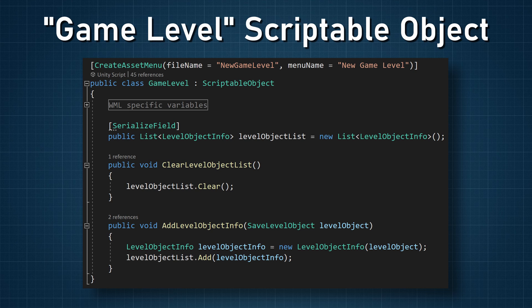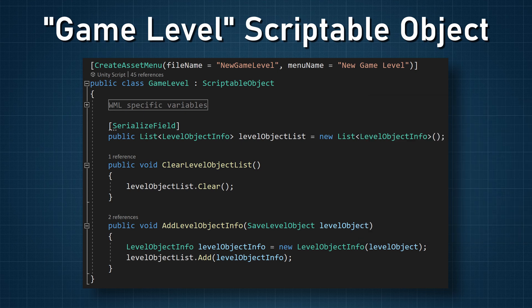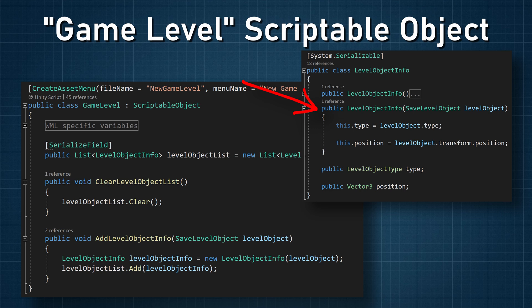Once the objects have been found, we need a place to keep them — that happens in the GameLevel class. The GameLevel class is a scriptable object, which means that game level objects will be a project asset, making them easy to handle in many ways. It has a list of LevelObjectInfo that will contain an enum of the object type and the position of that object. There are also two important functions: the first clears the list of objects and gets called in the save level function to ensure objects are only saved once. The second function adds a level object to the scriptable object — a SaveLevelObject is given as an input parameter and used in the class constructor to create a new LevelObjectInfo instance, which is then added to the level object list. Note that LevelObjectInfo is not a MonoBehaviour; it exists only in the list on the scriptable object.